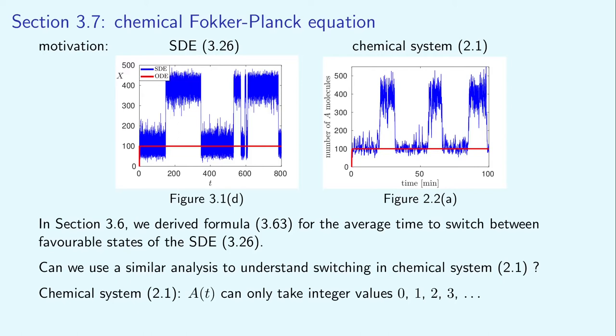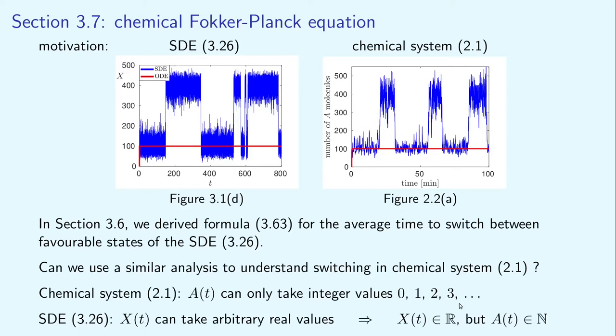There are some similarities between these two figures, but there are also some differences. In the figure on the right, we present the behavior of A(T), which describes the number of molecules of chemical species A. In particular, A(T) can only take integer values. On the other hand, stochastic differential equation 326 is written for continuous random variable X(T). So we have variable X(T) in R and the variable A(T) in integers.